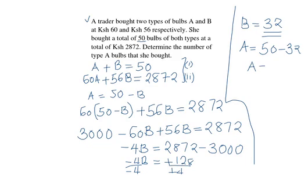Therefore type A bulbs were 50 minus 32, which is 18.